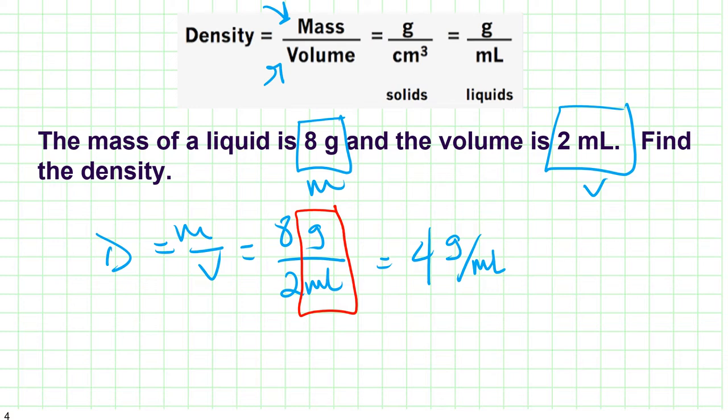Let's do a quick sig fig check. I have one sig fig right here and I have one sig fig right here. What's less, one or one? The answer is one. So we're going to keep one sig fig in our final answer, which is exactly what we have. This is our final answer, four grams per milliliter.